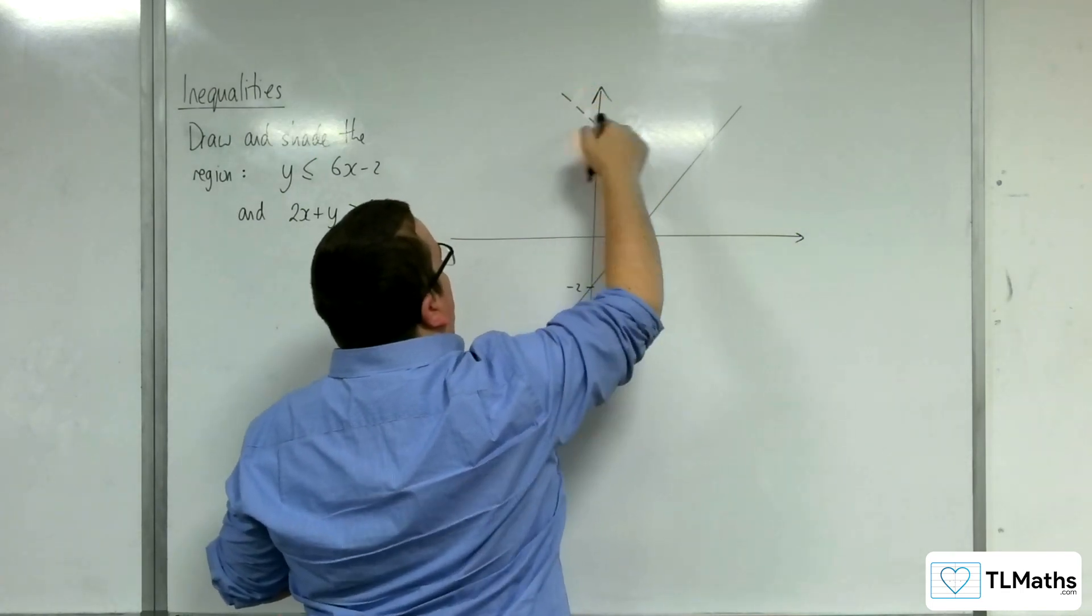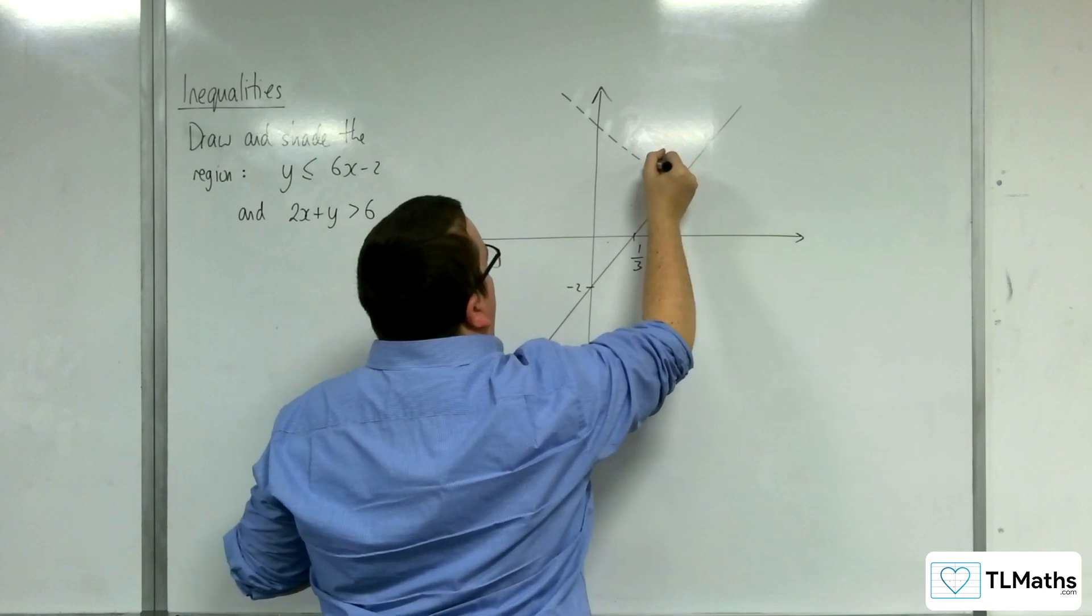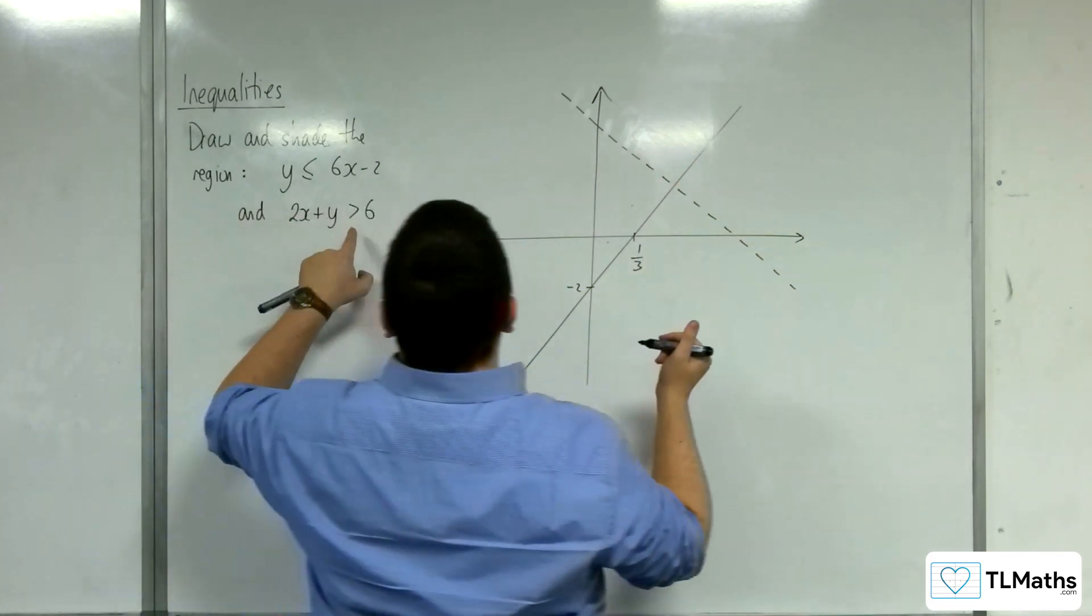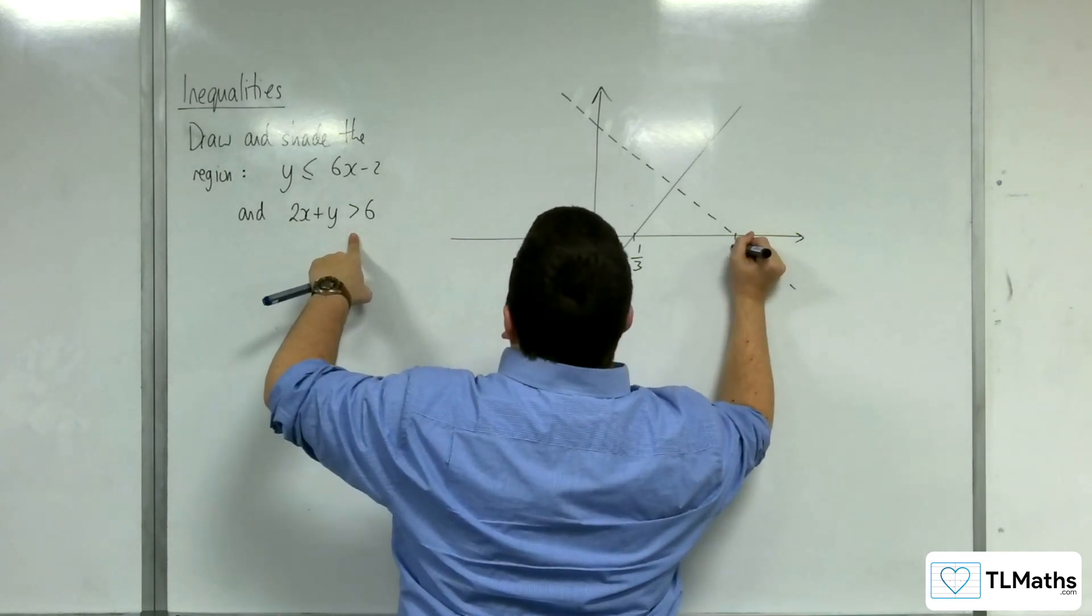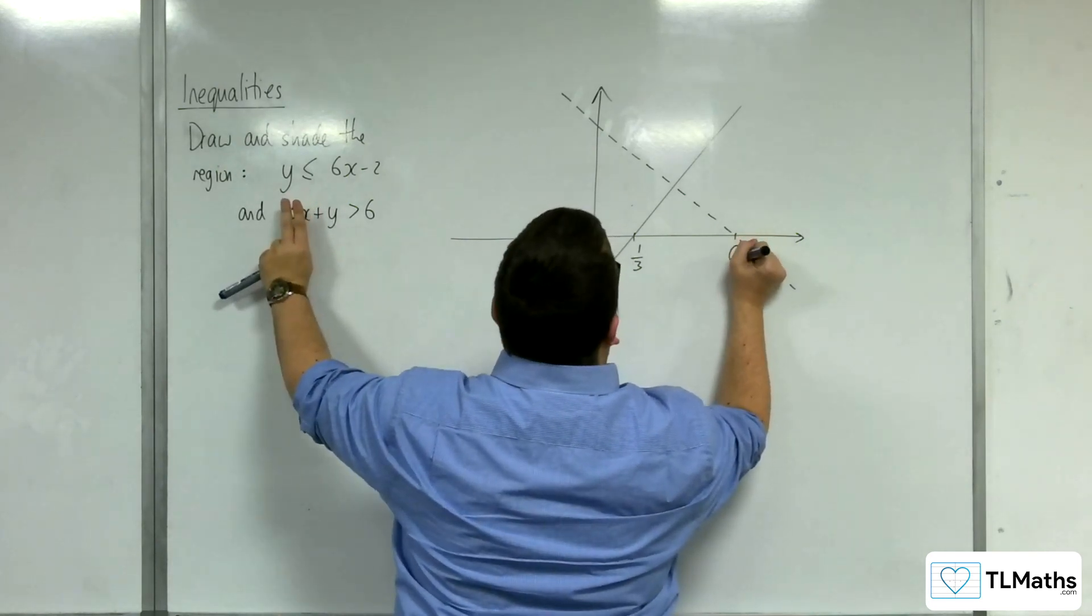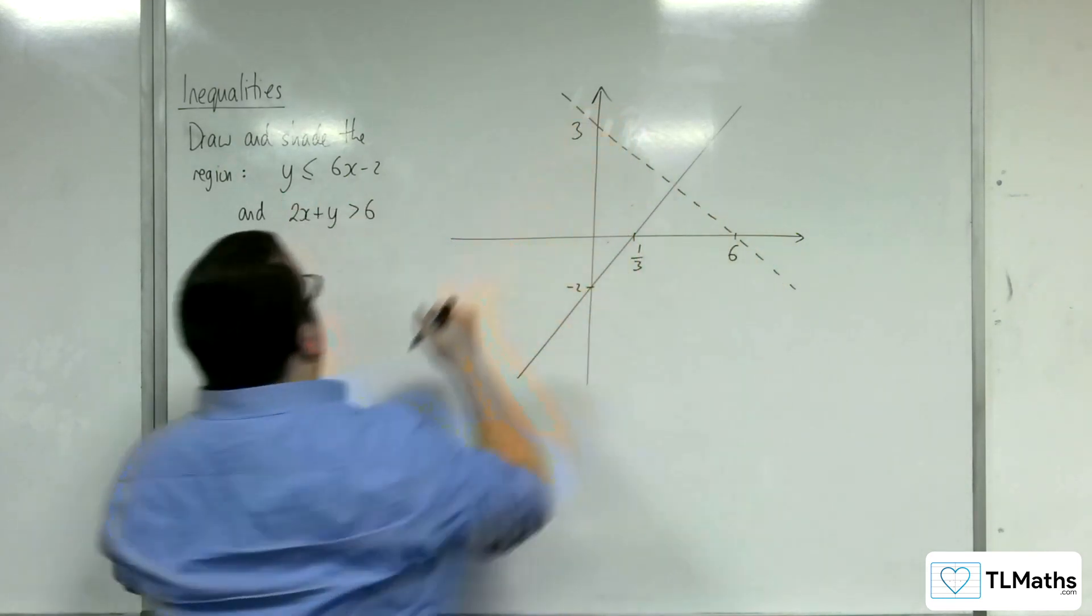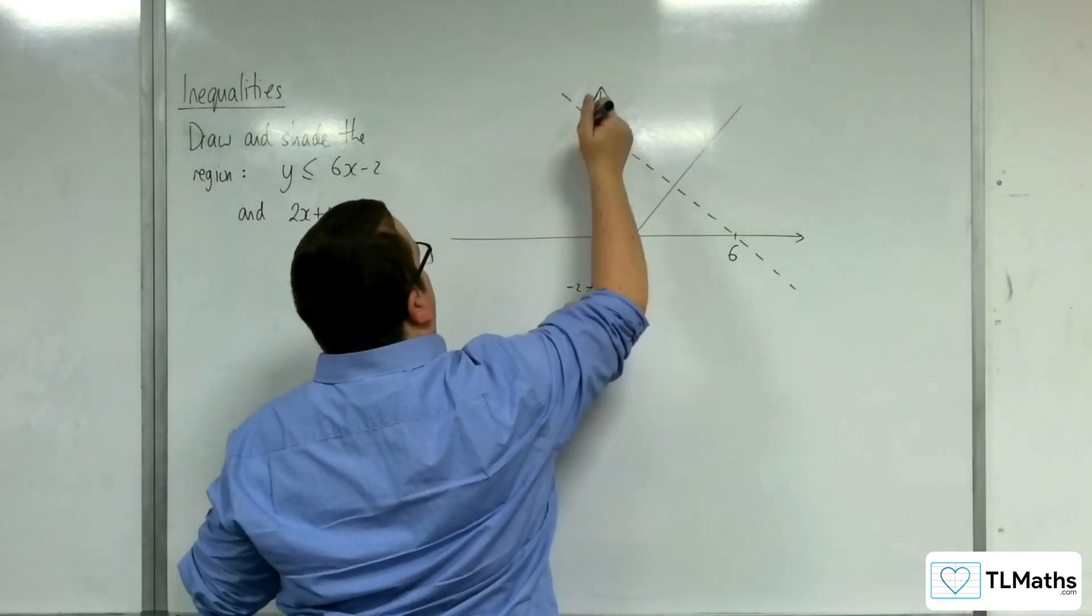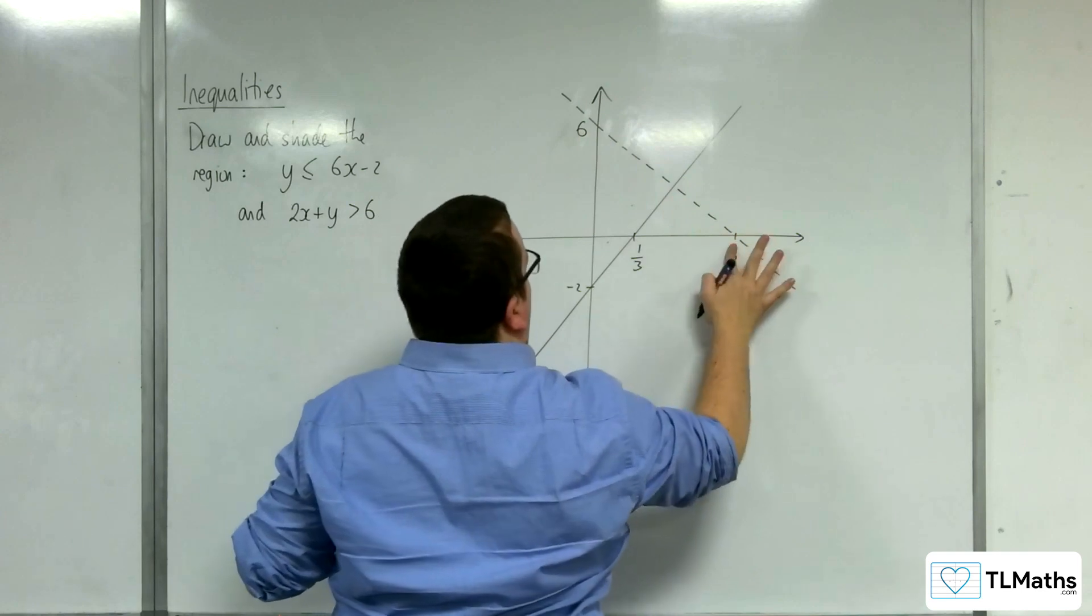It's going to be a dotted line as well, okay, because it's greater than. So something like that. So that point was 6, and that point was 3. Oh no, the other way around. Apologies. So that's 6, and that's 3.